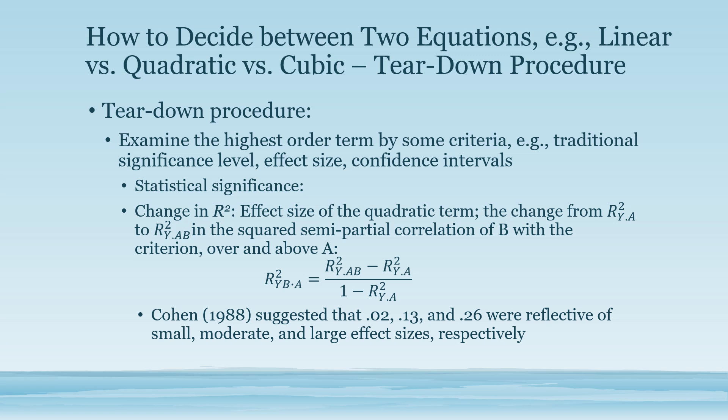The second criterion is change in R square. This indicates the effect size. For example, we can examine the change from the one predictor model to the two predictor model in the squared semi-partial correlation of B with the criteria over and above A. We examine the semi-partial correlation R square by B dot A. This equals the overall R square minus R square contributed by predictor A, divided by 1 minus R square contributed by predictor A.